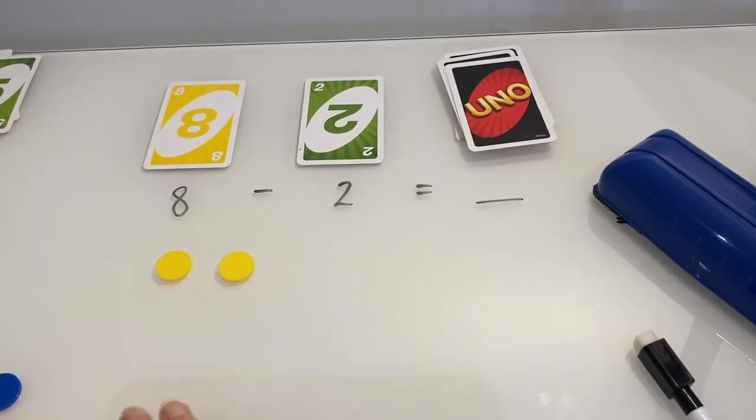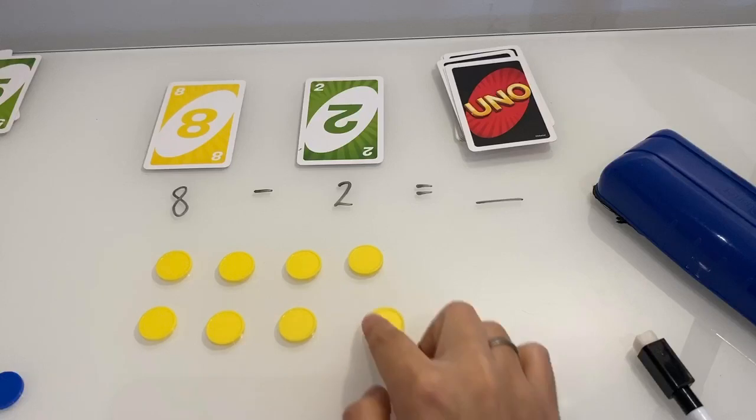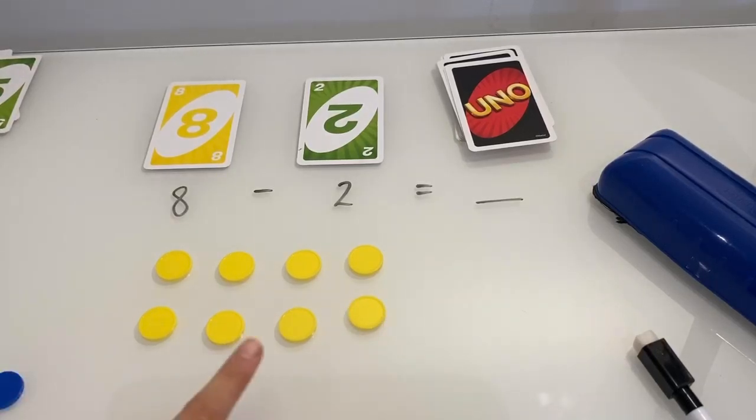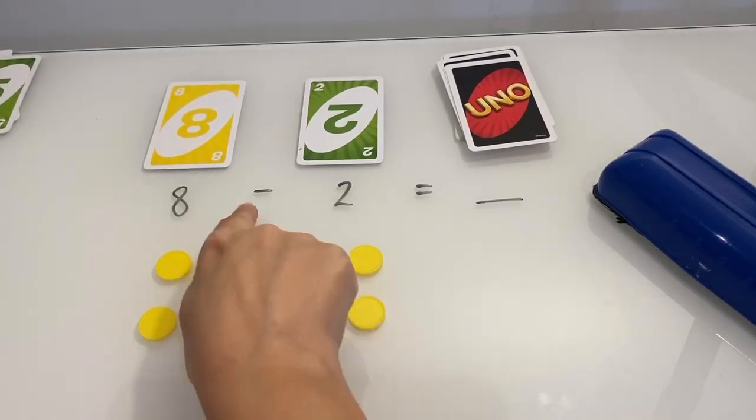So one, two, three, four, five, six, seven, eight. Eight counters. Take away two.